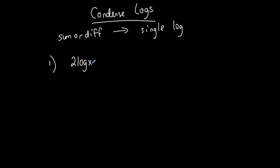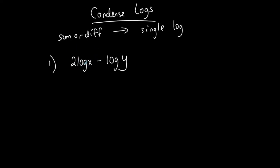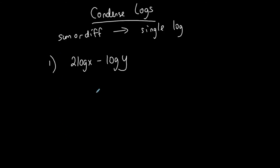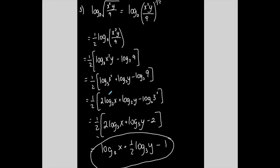So if I have something like this, I'm starting off in the opposite direction — starting where it's already expanded and I want to condense it into a single log. First of all, these properties always have coefficients of one. So I need to get rid of the coefficients first. That was the last thing I did when expanding — I got rid of the exponents and made them coefficients. Now I'm going in the opposite direction and making the coefficients into exponents.